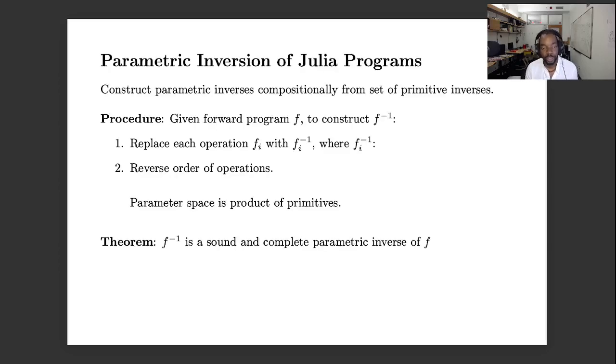Okay, so what does this mean for Julia? So the basic idea is that if we have a Julia program we can do the following procedure: one, go through each statement, invert that statement with this parametric inverse, and then reverse the order of the operations. And if we do this we get a parametric inverse of the entire complicated Julia program.